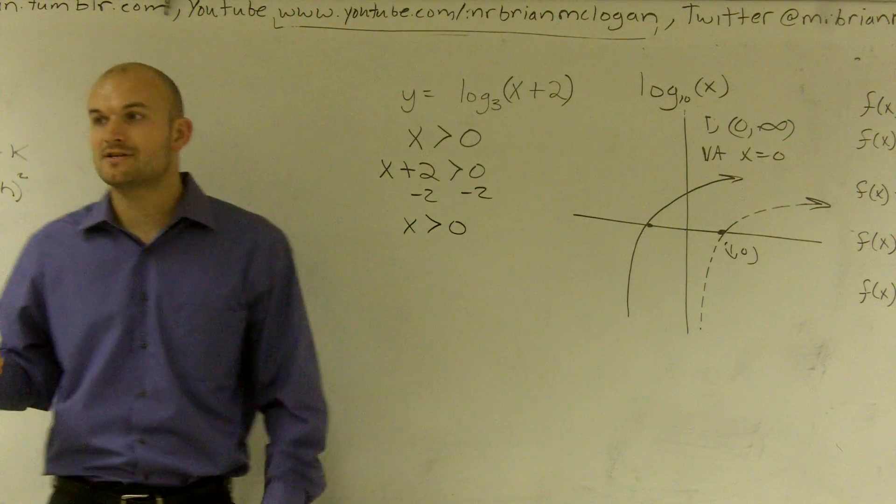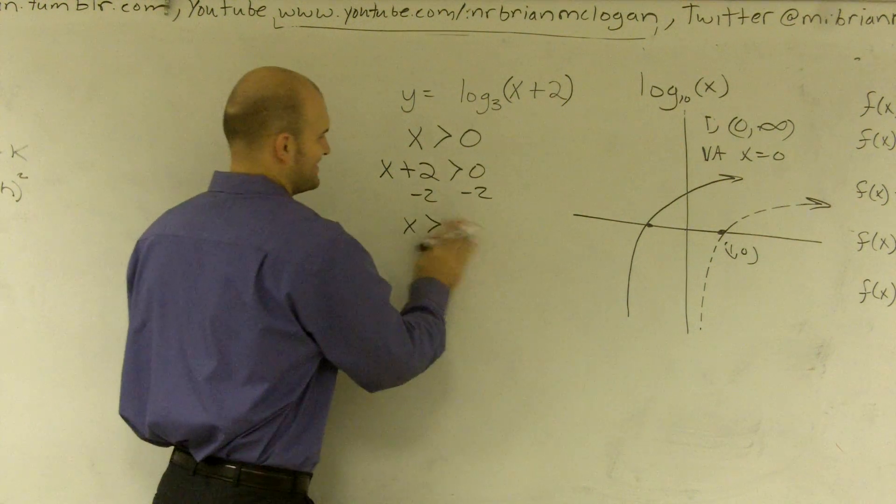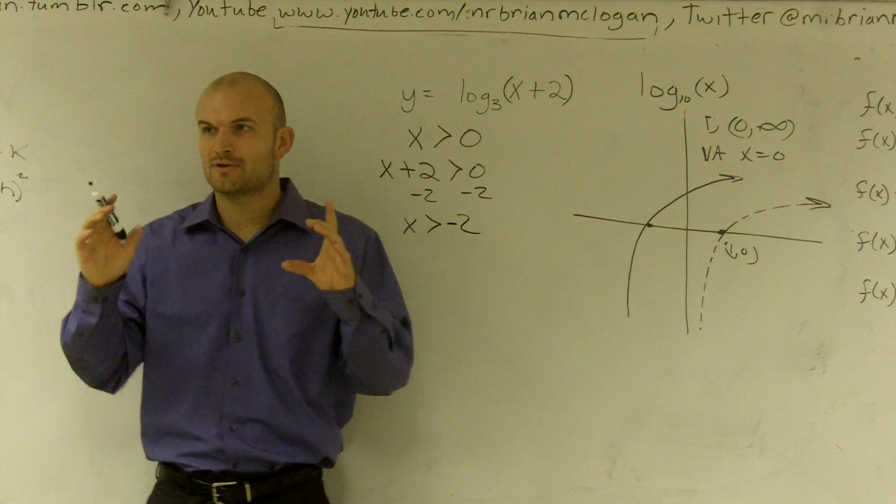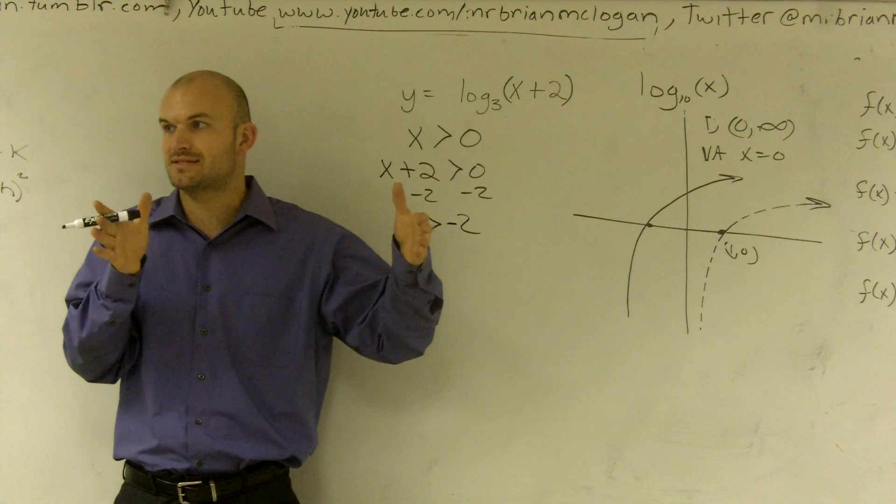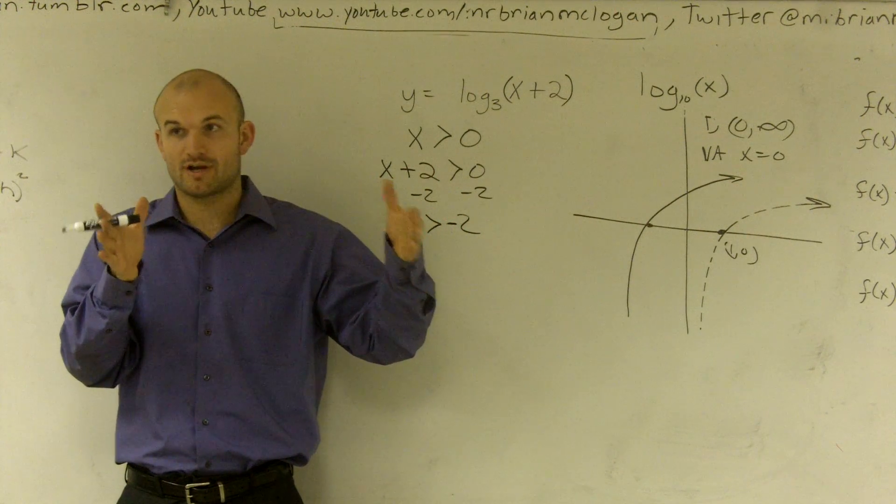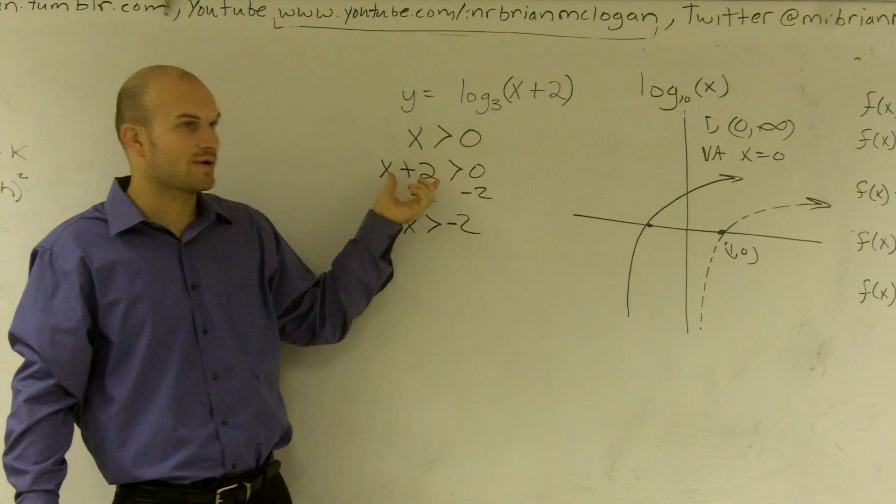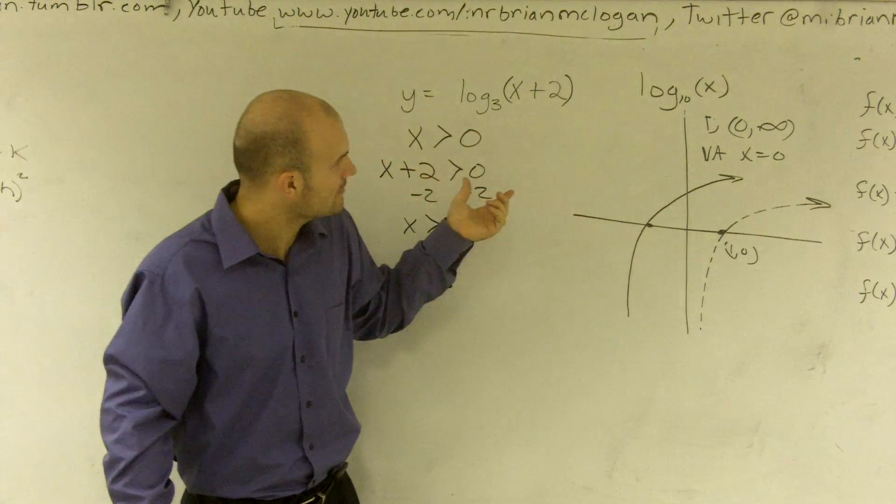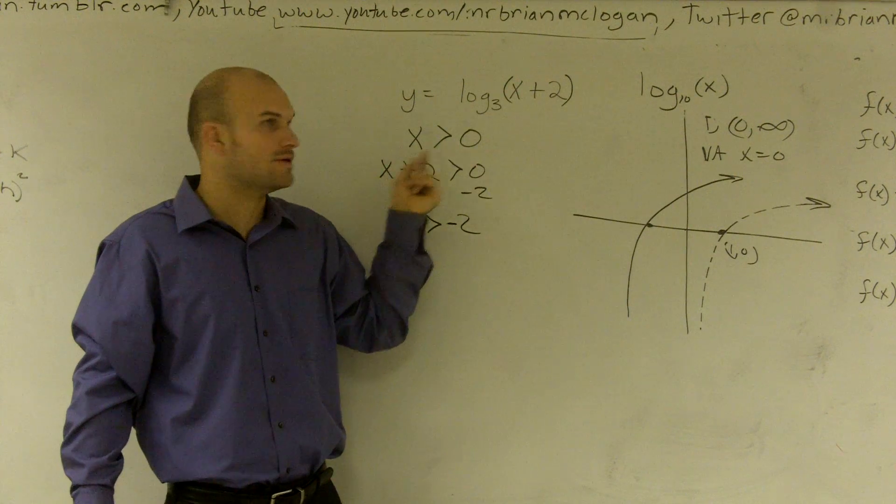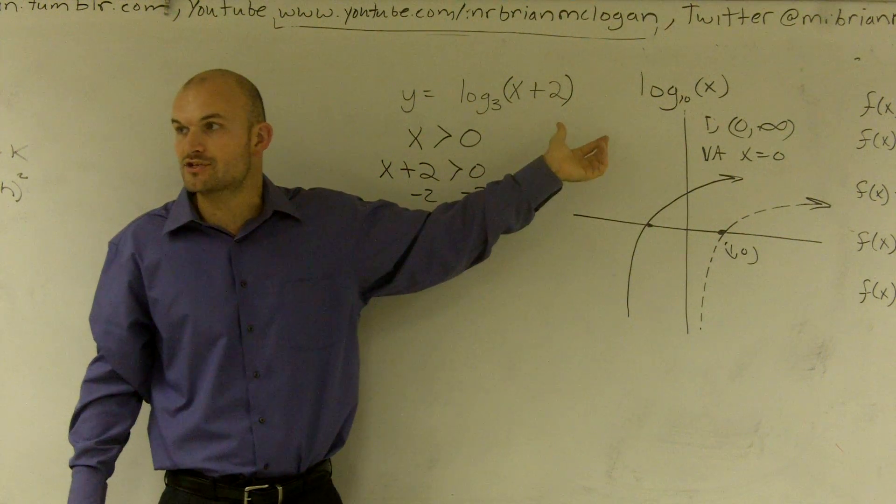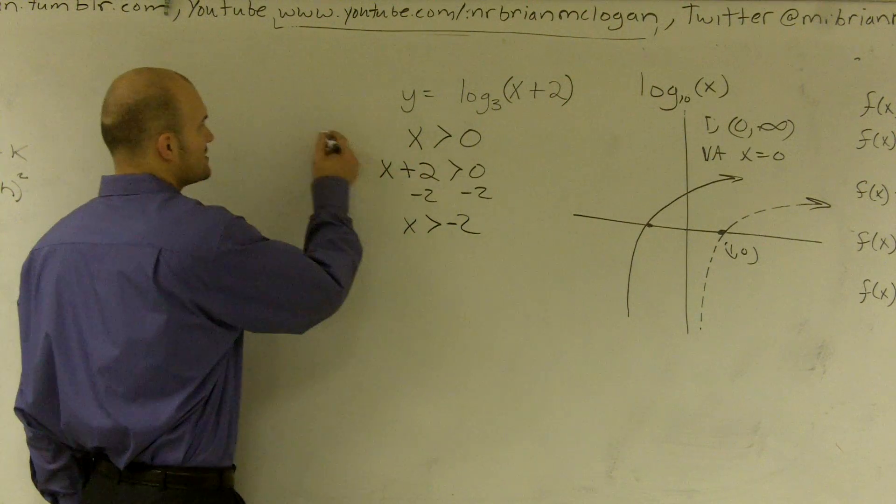Do you guys remember doing the domain for a radical? Remember when we did domain, I said set what's inside of, under the radical, set that greater than 0? You guys remember that, greater than or equal to 0? This is kind of the same thing. You're going to take what's inside of your function and set that greater than 0 because that's your domain. Your domain is all x values greater than 0. So if you're changing anything inside of your function, set that equal to 0, or I'm sorry, greater than 0. The same thing, so this is for your domain.